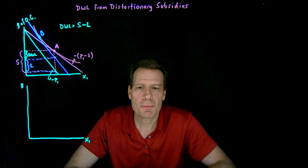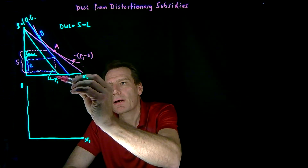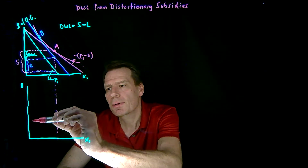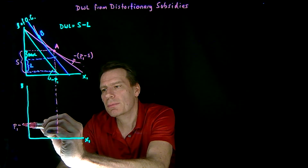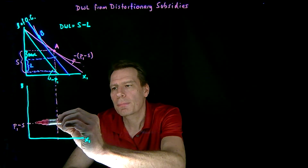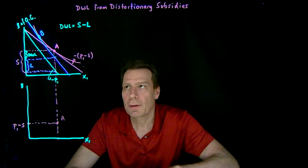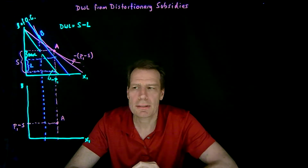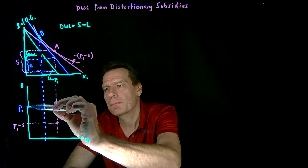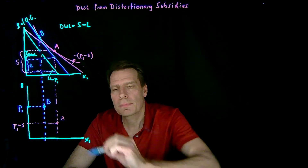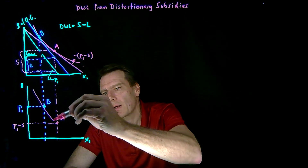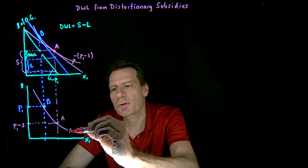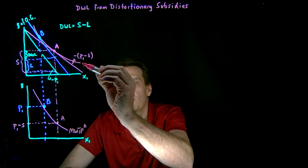In the marginal willingness to pay picture, we can show those same areas just as we did with taxes. We bring down point A, which happens at the lower prices that include the subsidy — prices where we subtract the per unit subsidy. Point B happens on the steeper budget at the undistorted prices, which are higher in the case of a subsidy. When we connect those, we get a marginal willingness to pay curve derived from tangencies along a single indifference curve — the curve corresponding to utility level A.